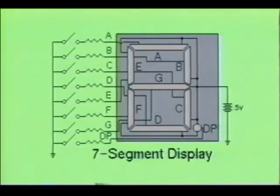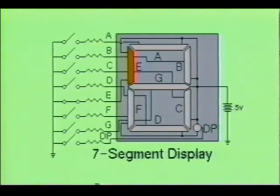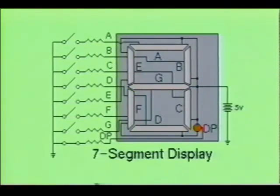The 7-segment LED has 8 PN junctions, labeled A, B, C, D, E, F, G, and DP, that emit light energy when forward biased. Seven of these junctions are used for decimal numbers 0 through 9, and one junction is used for the decimal point.